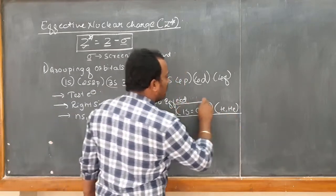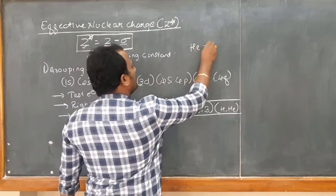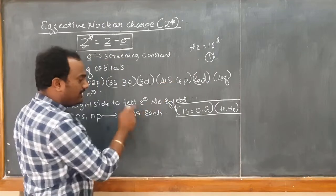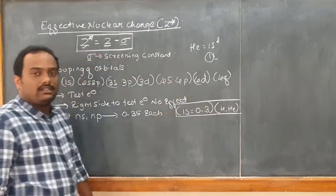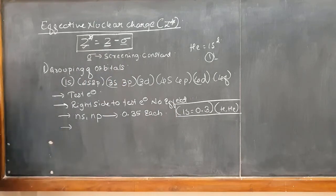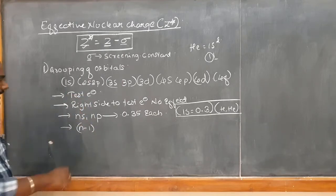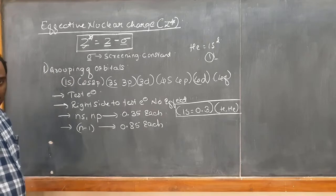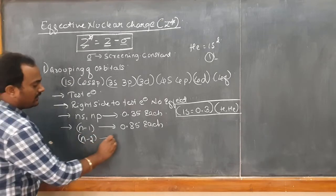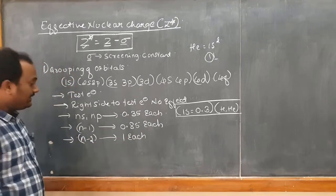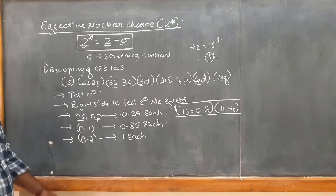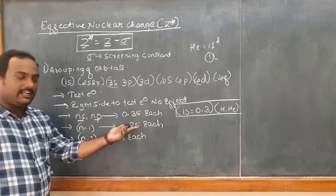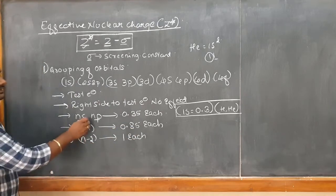For example, if you want to test the last electron of helium — that is 1s², you take 0.3 for the other electron in 1s, not 0.35. If your test electron is in an Ns or Np orbital, for electrons in the (N-1) shell you take 0.85 each, and for electrons in the (N-2) shell and below you take 1 each.